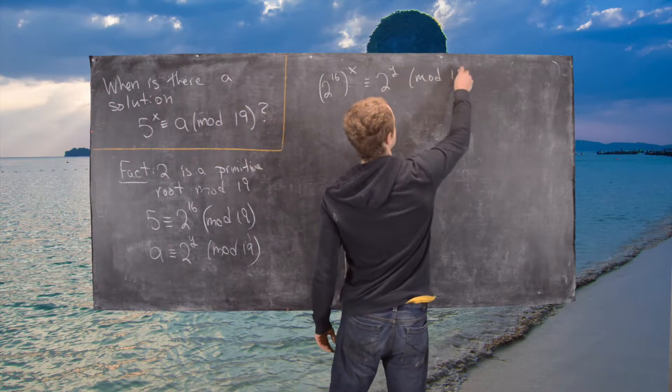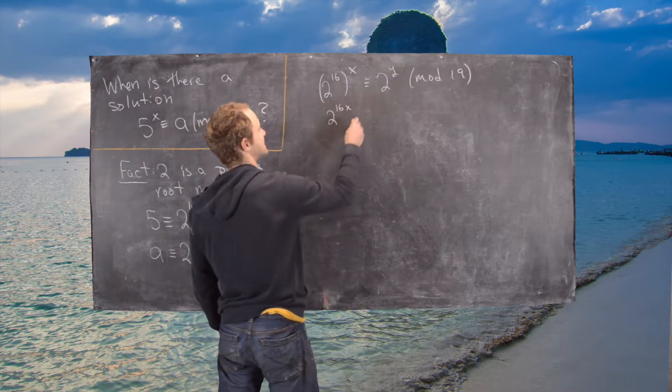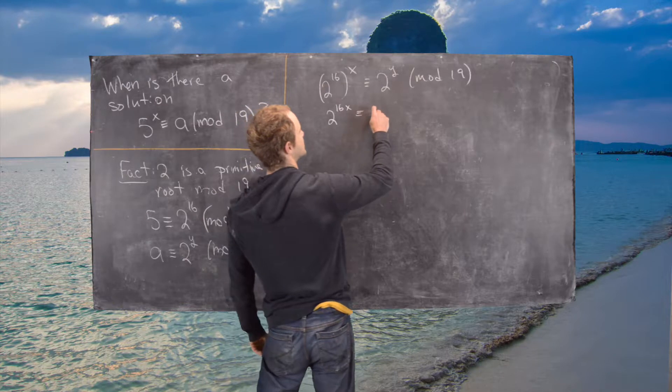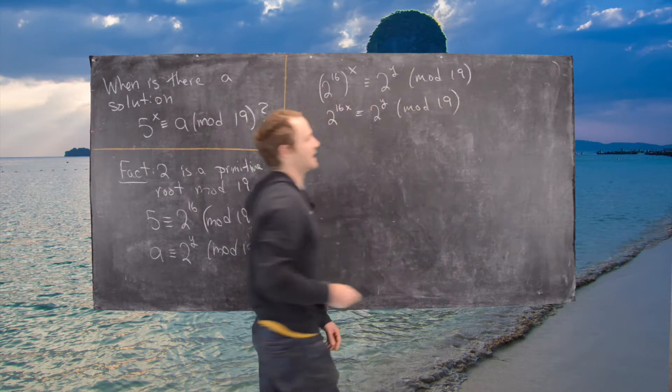And now that's mod 19. So using exponent rules, that's the same thing as 2 to the 16x is congruent to 2 to the y mod 19.